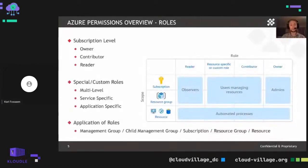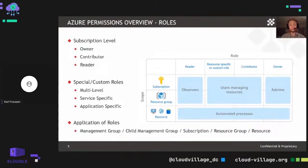Going one step down from the tenant to individual subscriptions: subscriptions can be housed within management groups, which can have child management groups. Within the subscription there are resource groups and resources, and role assignments can be applied at any of those levels. Typically in a normal subscription, we're seeing roles applied at the subscription level or the management group level. If somebody is really focused on setting RBAC and IAM controls, they'll scope things all the way down to individual resources, but from a practical day-to-day perspective roles are usually scoped to the subscription or management group.